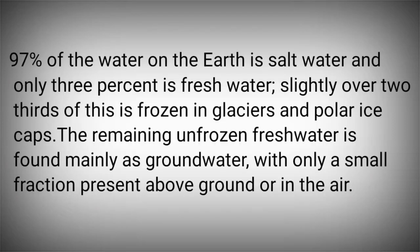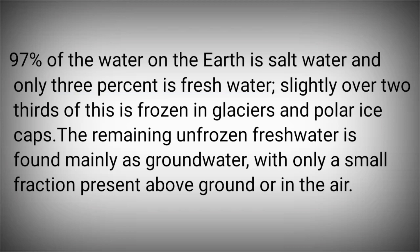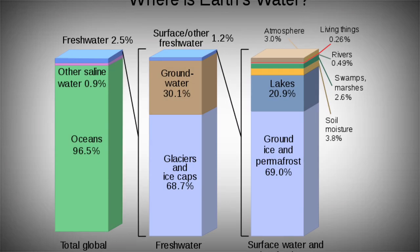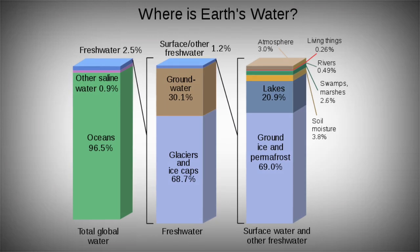As we know, two-thirds of the earth is covered with water, but 97% of water is saline. Only 3% of water is freshwater. Out of that 3%, 2% is present in glaciers or in the polar ice caps, and only 1% is available as freshwater.